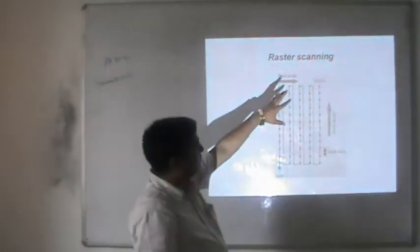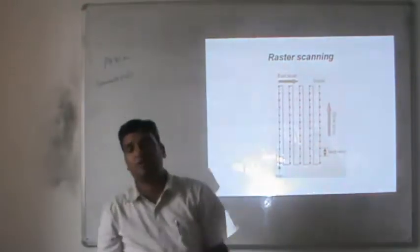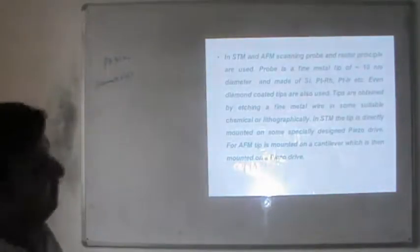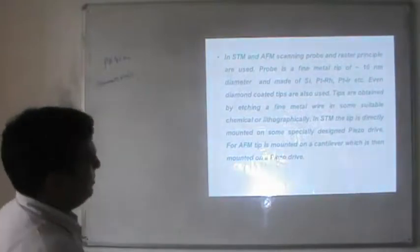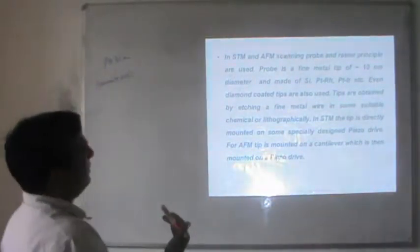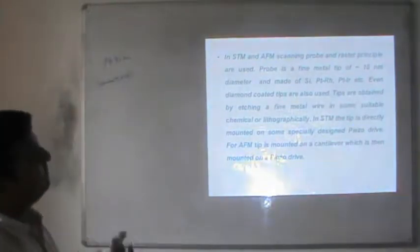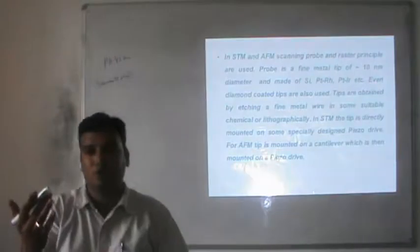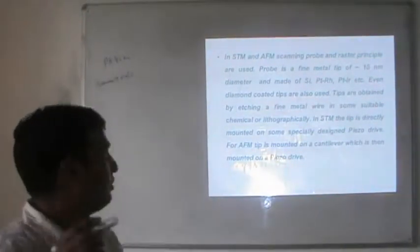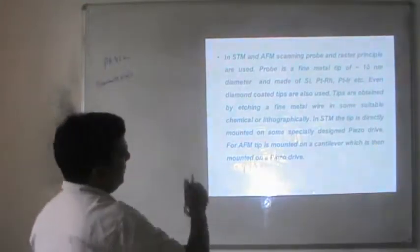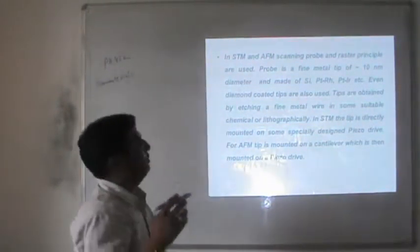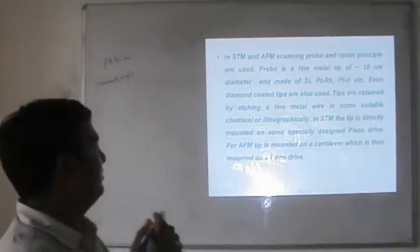In STM and AFM, scanning probe and feedback principles are used. The probe is used to scan the sample and most of the time it is a single atom probe. In AFM we talk about the change in force — electrostatic force, magnetic force, or other forces — which are responsible for information about the sample. The probe is a fine metal tip of approximately 10 nanometer diameter, made of silicon, platinum-iridium, rhodium, or similar alloys.